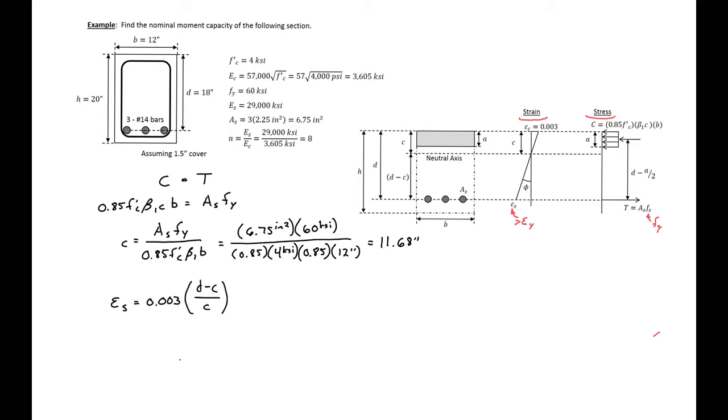I will next need to use our strain diagram and our similar triangles to find the actual strain in our steel at this point. So I've done that already here and rearranged it for epsilon_s, and we can plug in our values then. So we'll have 0.003 times d minus C divided by C, and this will give us a strain of 0.00162.